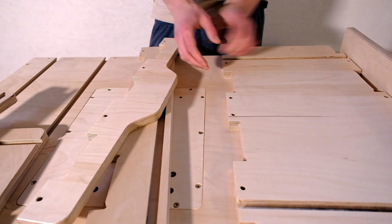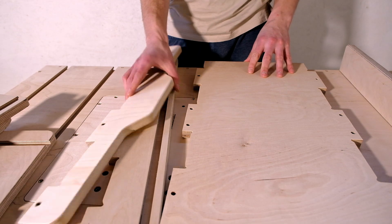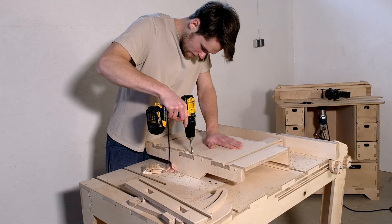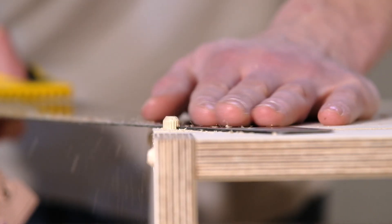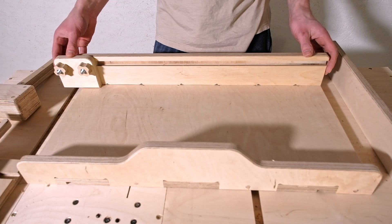When the T profiles were ready I assembled the other accessories. For the crosscut sled I decided to use dowel reinforcements. Also I made a small stopper panel that will be useful when doing precise cuts.